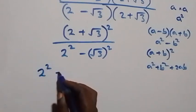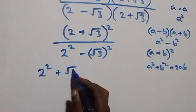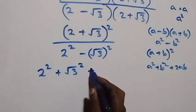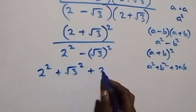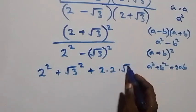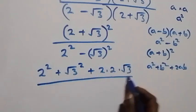The expansion of (a + b)² is a² + b² + 2ab. So in the numerator we have 2² plus (√3)² plus 2 times 2 times √3.